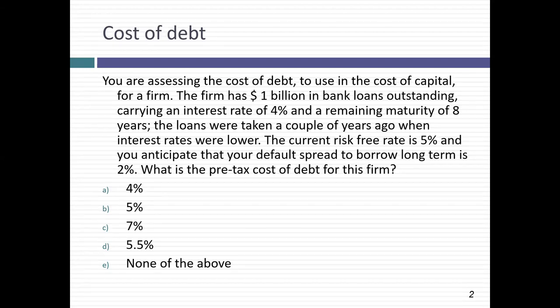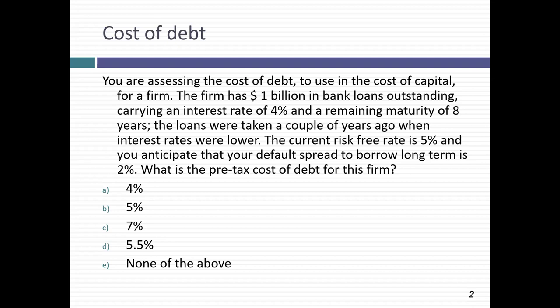If you treat your cost of debt as 4% and a project is 100% debt-financed with a 4.5% return, you should take it by that logic — but you can make 5% risk-free. Why would you take a 4.5% return project when you can make 5% risk-free? So 4% is off the list. The answer: the pre-tax cost of debt for this company is 7% — the rate at which you can borrow money today, even if you never plan to.